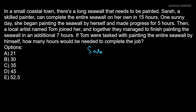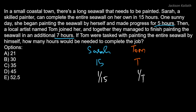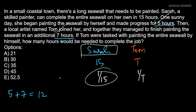This is pretty similar to the previous question. We have Sarah and Tom. Sarah can complete painting the entire sea wall in 15 hours; let's say Tom can do it in T hours. In one hour Sarah does 1/15 of the work and Tom does 1/T. Using the shortcut: Sarah worked 5 + 7 = 12 hours total, so she completed 12 × (1/15) = 12/15 of the work.